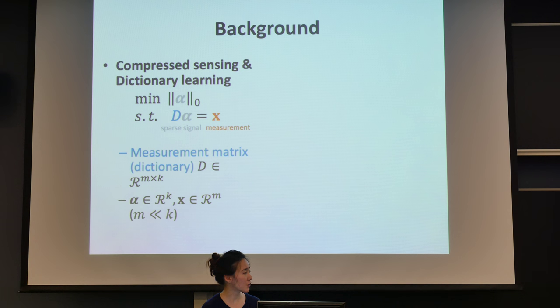So the matrix that's doing this linear projection is D. It's called measurement matrix or a dictionary here. Dictionary learning here means learning a good matrix for D.